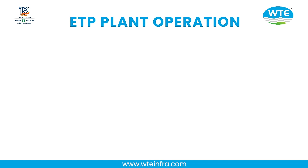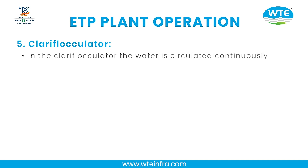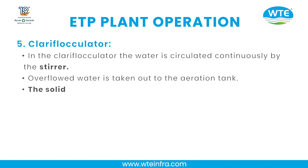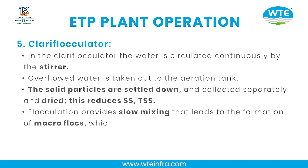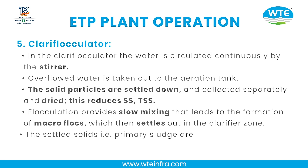Step 5 — Clarifloculator: Water is circulated continuously by a stirrer. Overflowed water is taken out to the aeration tank. Solid particles settle down and are collected and dried, reducing TSS. Flocculation provides slow mixing that leads to the formation of microflocs, which then settle out in the clarifier zone. The settled solids (primary sludge) are pumped into the sludge drying beds.